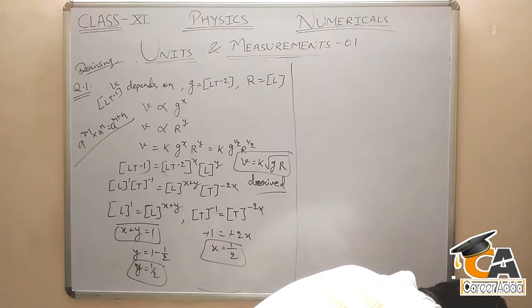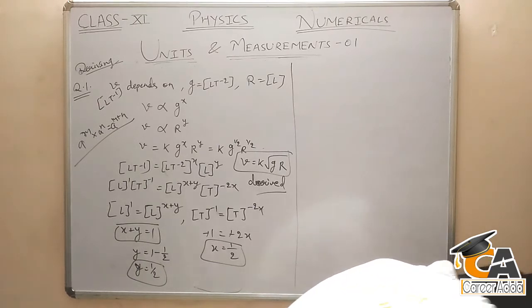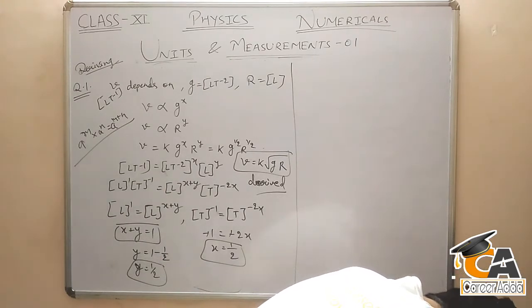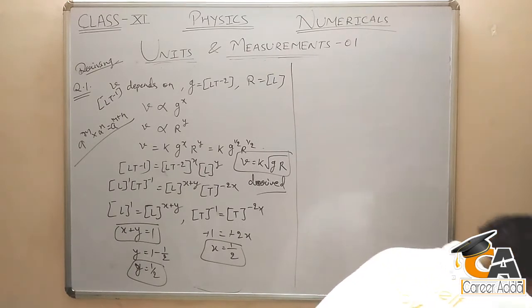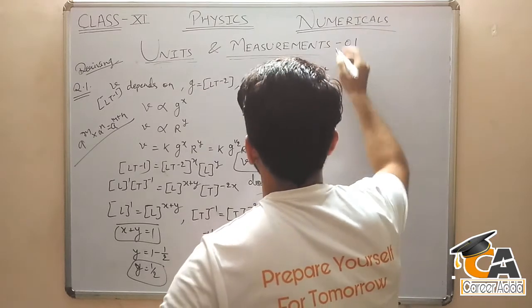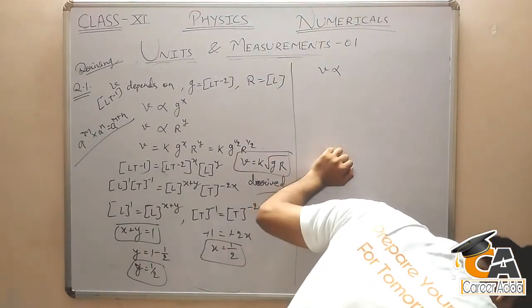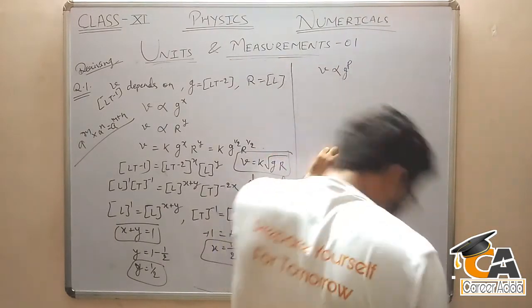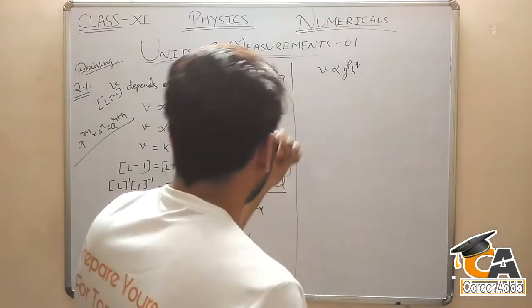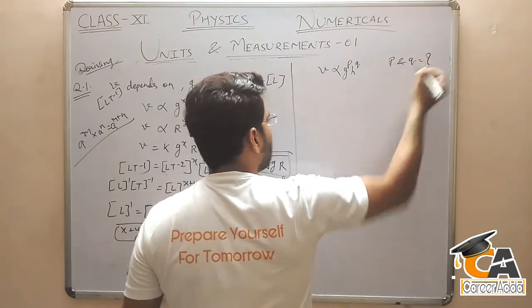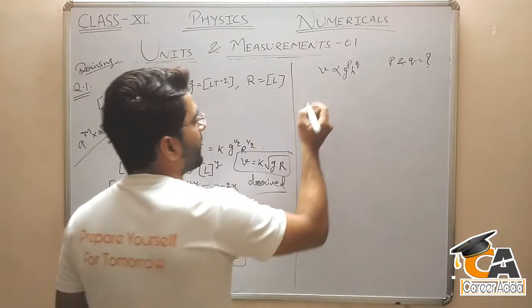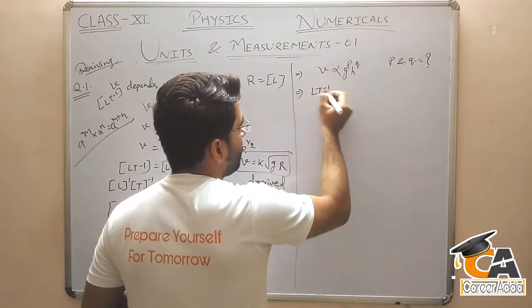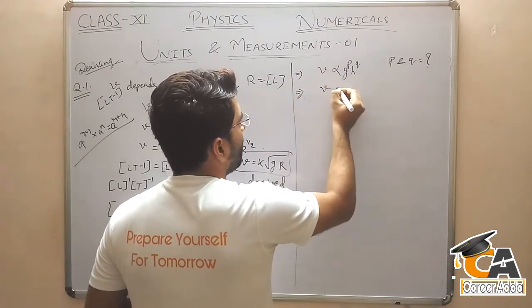Next question: The velocity of a body which has fallen freely under gravity varies as G to the power P, H to the power Q, where G is acceleration due to gravity at a place and H is the height from which the body has fallen. Determine the values of P and Q. Velocity V is LT⁻¹.